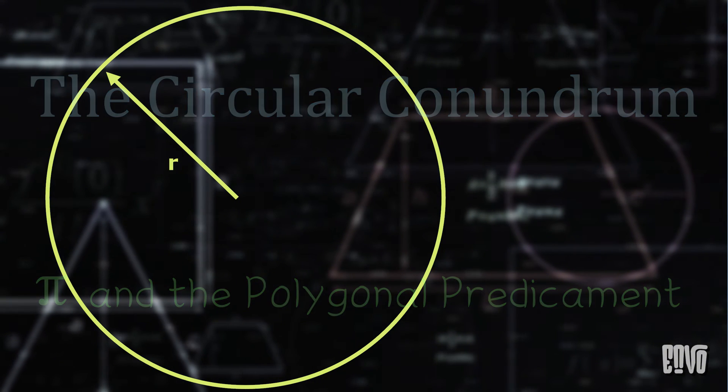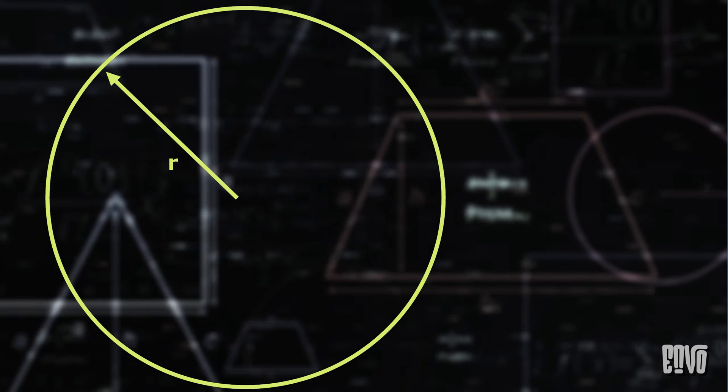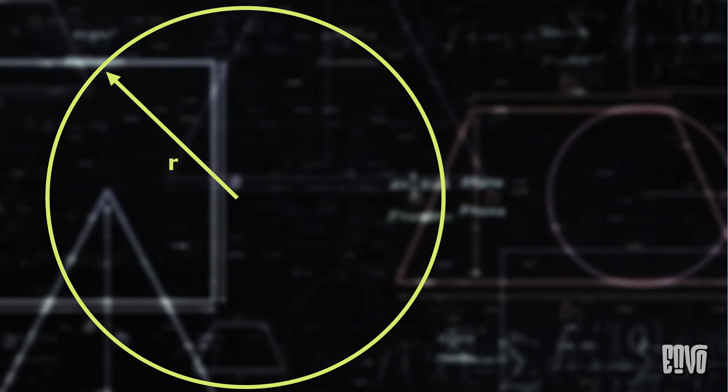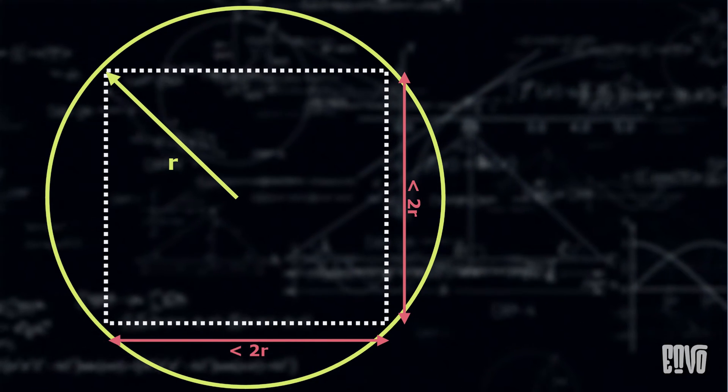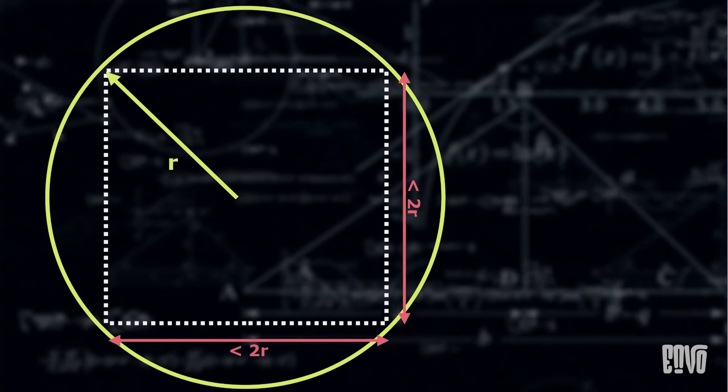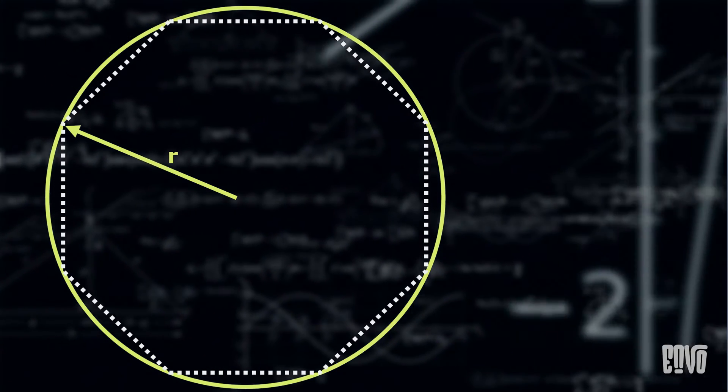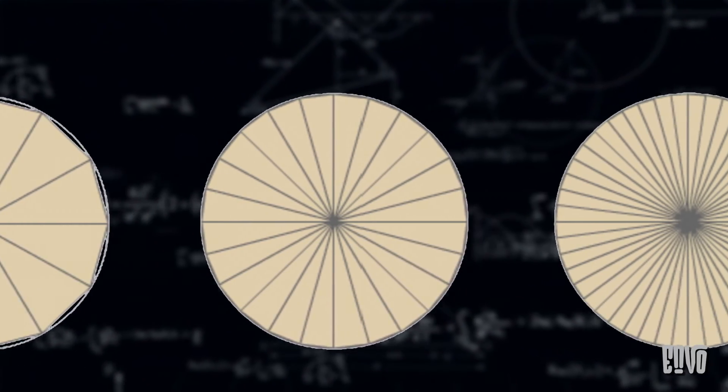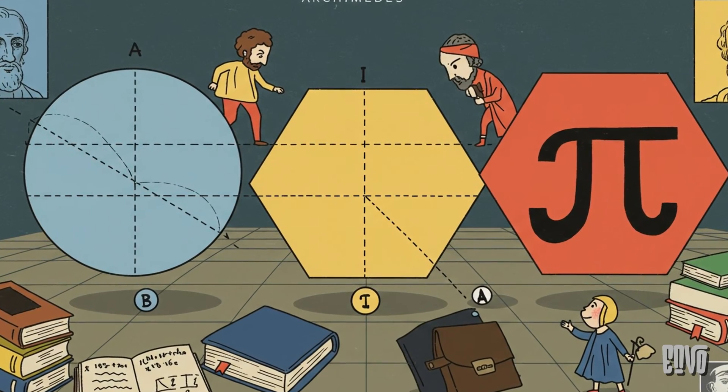The staircase paradox isn't just about straight lines. It has a famous cousin involving circles and the mystical number pi. Recall that the circumference of a circle is 2 pi r. Now, imagine approximating a circle using polygons. If you inscribe a square inside a circle, its perimeter will be less than the circle's circumference. As you increase the number of sides of the inscribed polygon, octagon, 16-gon, 32-gon, and so on, the polygon's perimeter gets closer and closer to the circle's circumference. This is how ancient mathematicians like Archimedes approximated pi.